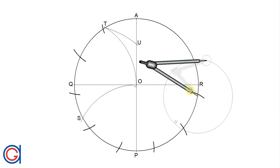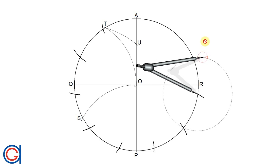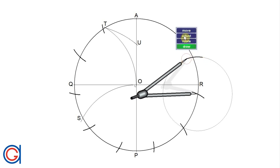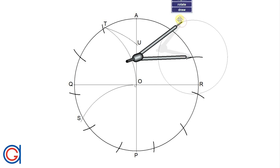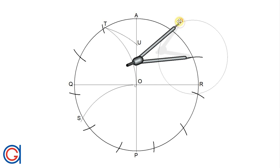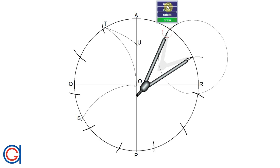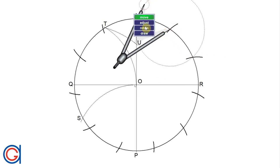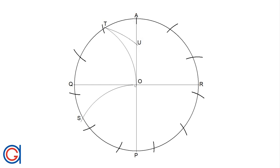Here we have our 9th vertex. If we have been working with precision and accuracy, our final arc should cut point A exactly, as can be seen here.